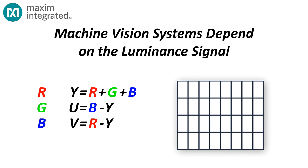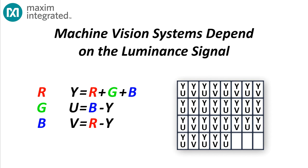For example, some image sensors will send, for one pixel, the Y value and the U value, and then for the next pixel, send the Y value and the V value. The image processor knows the intensity value for every pixel, but it only gets complete chroma information for every pair of pixels. For each pixel, the image processor will look at adjacent pixels and compute the most likely correct color value for that pixel.